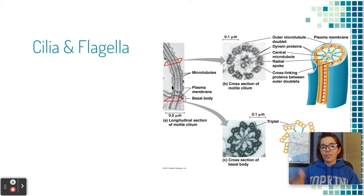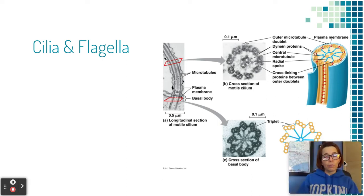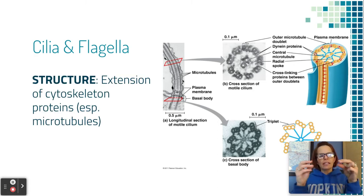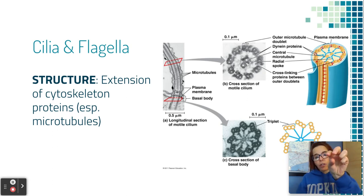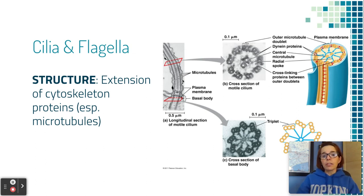Cilia and flagella have a super interesting structure — that's why we're talking about them. They're made of bundles of microtubules. There's a black and white photo showing a cross section of a cilium: if we cut it and look straight at it, we see a whole bunch of microtubules paired together. We're not going to go into all the details, but it's a pretty cool structure.